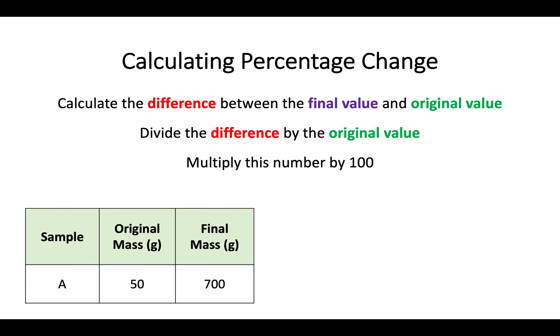Okay so for this one here, again just following the same structure, every single time you come across a percentage change question you should start it off as always with finding the difference. So the difference in this case, the final mass was 700 grams and then the original mass was 50. So your difference here was 650.